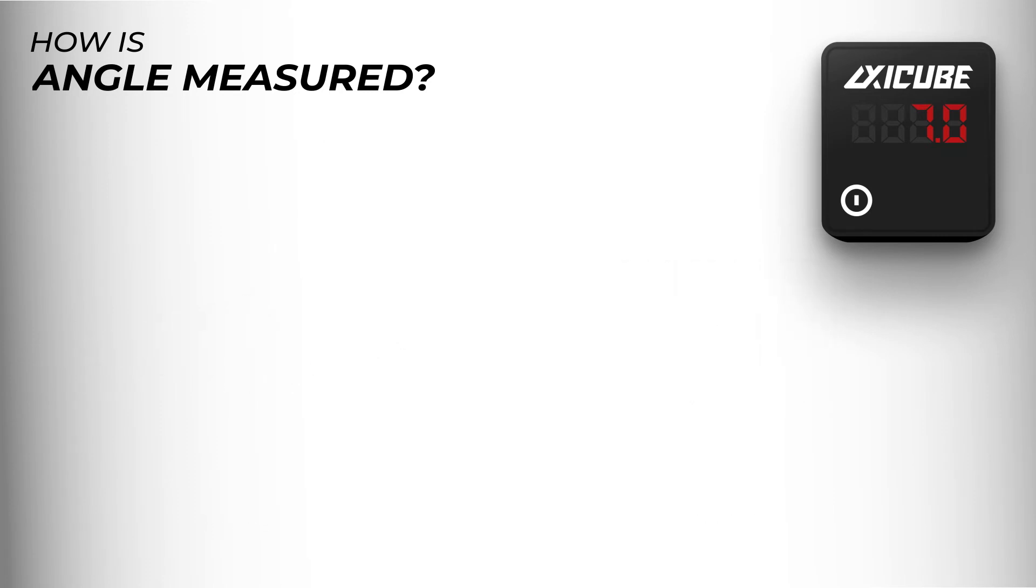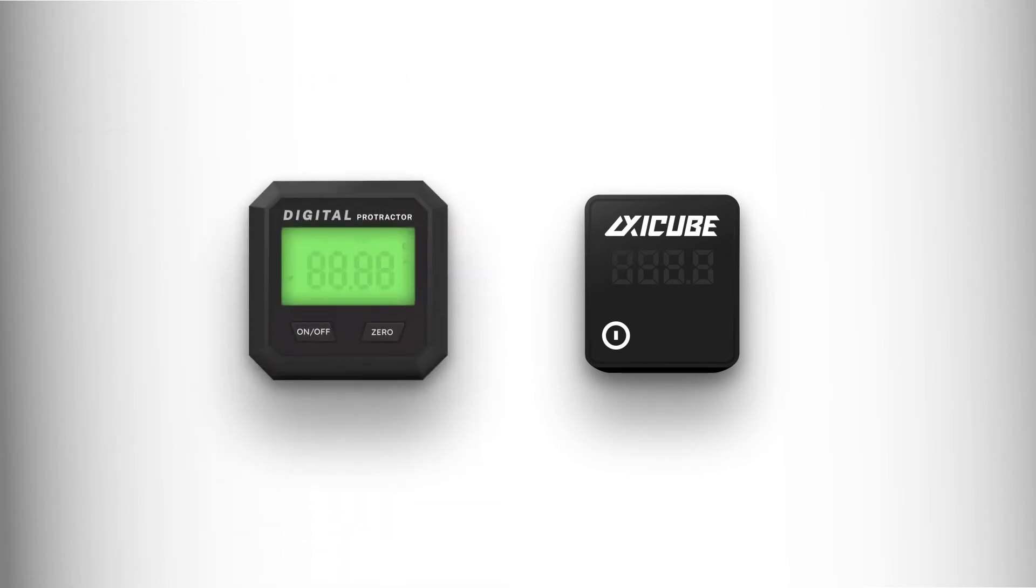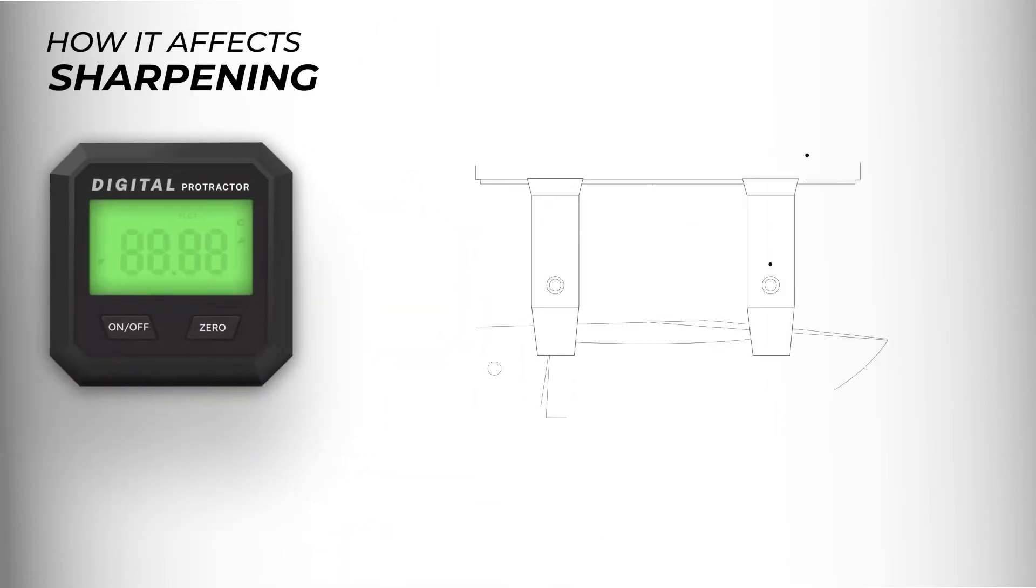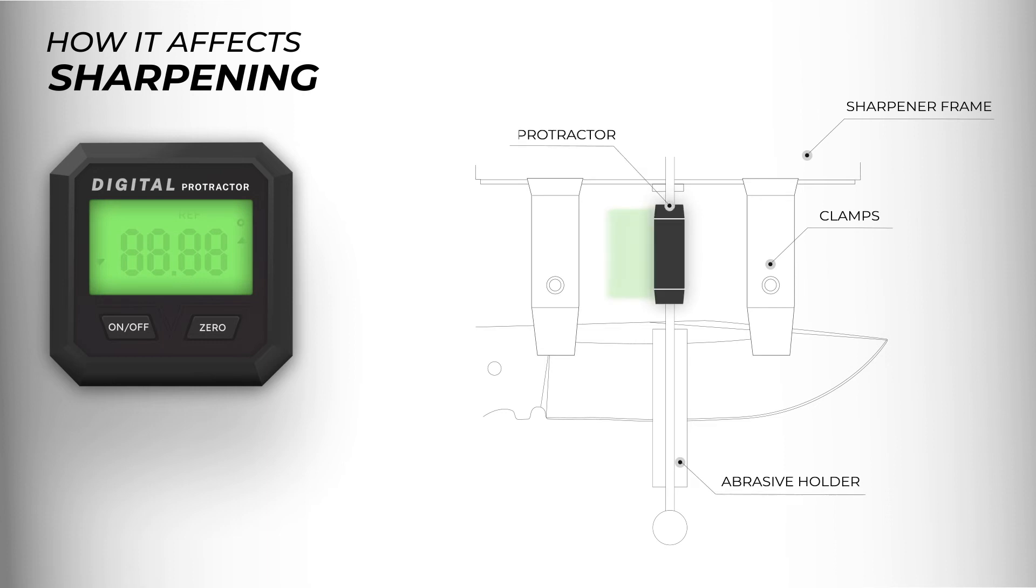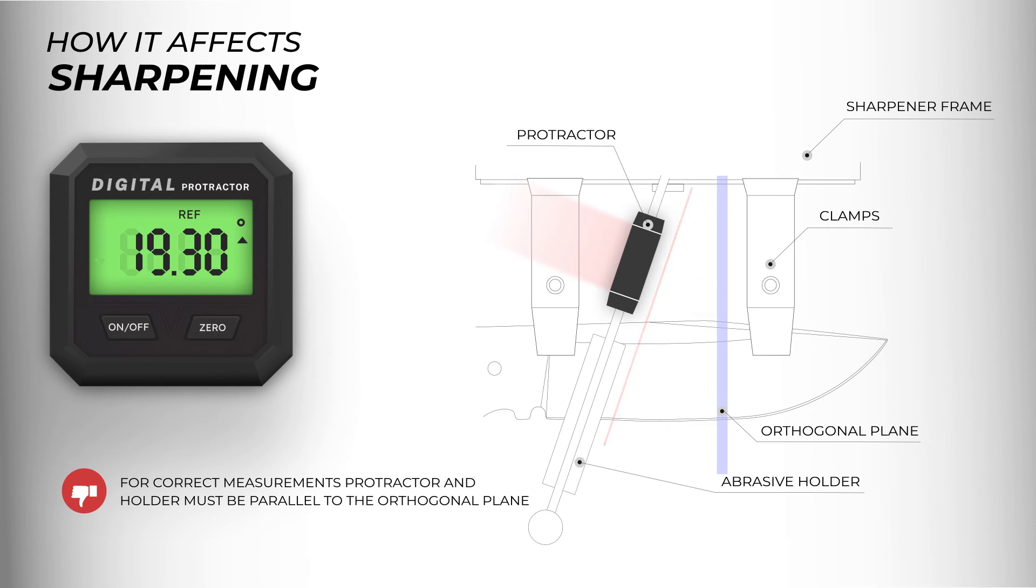So, how does the choice of a measuring device affect sharpening? Using a common protractor, the readings will only be correct if the angle finder is parallel to the orthogonal plane. However, as soon as this position is changed, the angle finder will show a wrong value, which has a negative effect on the sharpening result. This is bad.